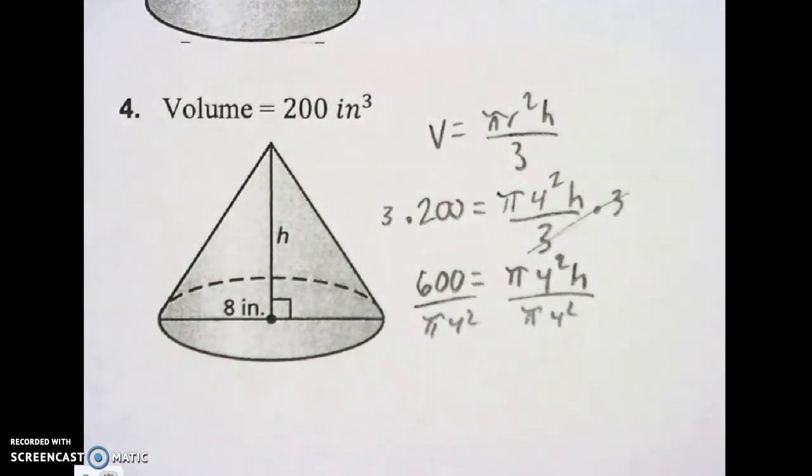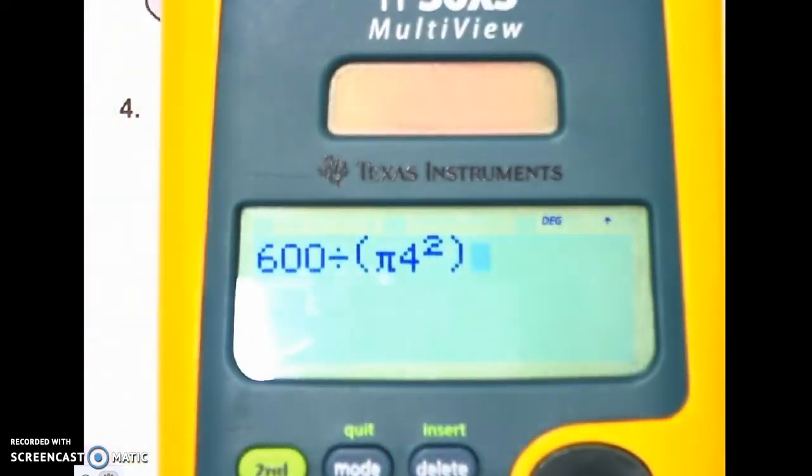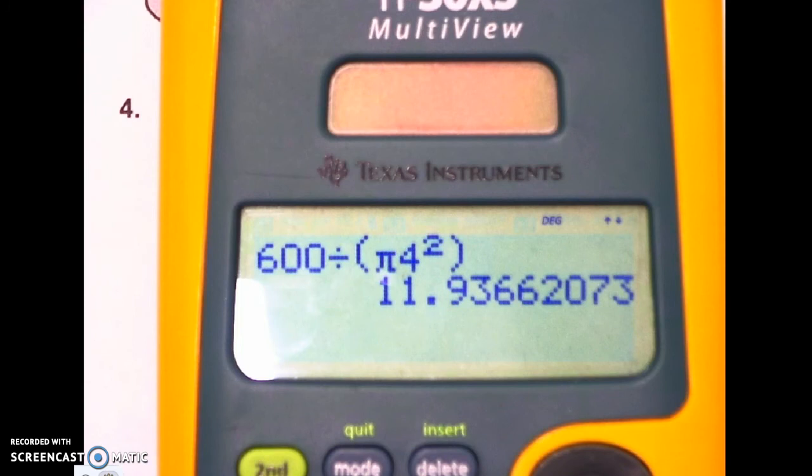And here's what that'll look like on the calculator. I'm going to type that in. So it'll be 600 divided by parentheses pi four squared and parentheses. You'll need to type in your calculator like that to make that work. I don't know if my calculator is in the right mode, but it looks like it worked.